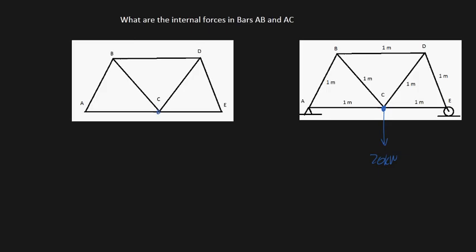It's going to look something like this on our free body diagram. We're going to have our 20 kN force down here, but we're also going to have a 10 kN force upwards at point E and a 10 kN force upwards at point A. I've shown how to do this in a previous video.